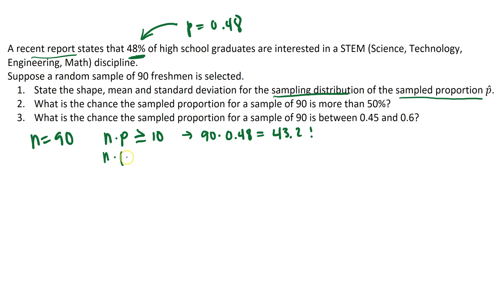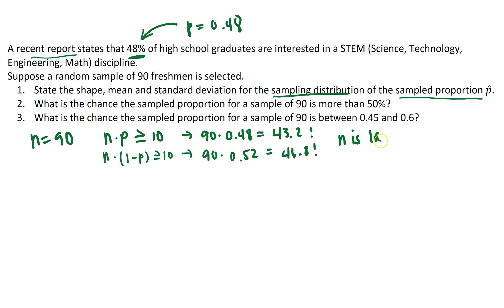We also need to check if n times 1 minus p is greater than or equal to 10. This will make sure that our categorical variable is somewhat balanced — that our sample size is large enough to balance out any extremes, like really low or really high proportions from the population. So n times 1 minus p is 90 times 0.52, which equals 46.8. This tells us that n is large enough at 90 for us to apply the central limit theorem.